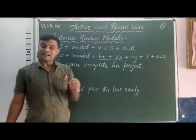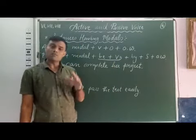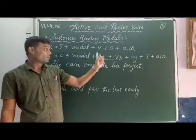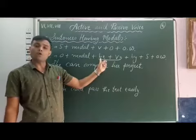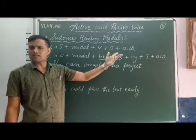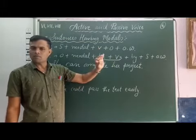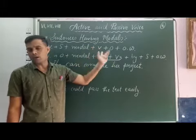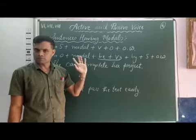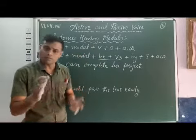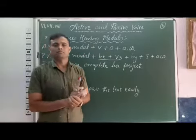So when the sentence is having modals, we use the 'be' form and V3 — whatever verb is given, its V3 we have to use. And before 'be', we have to use the given modal.